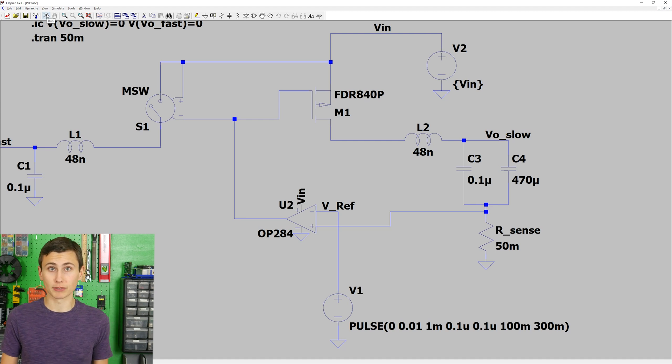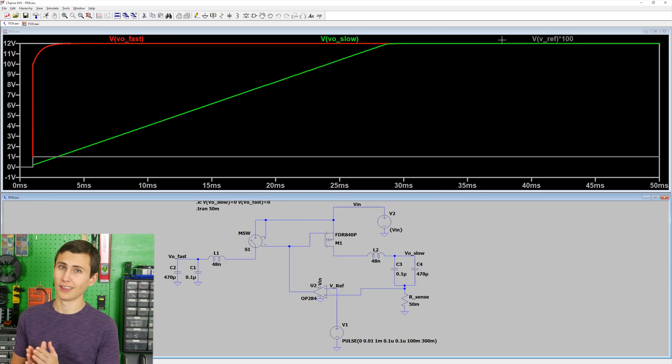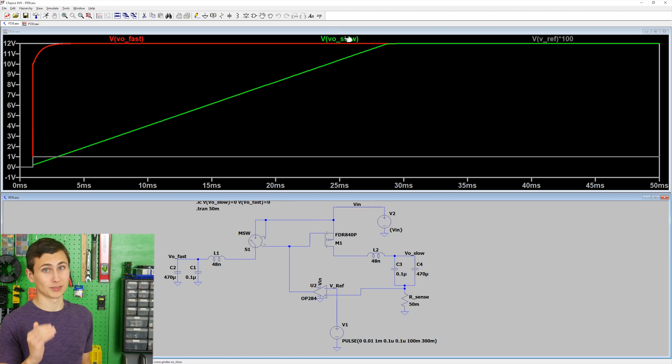Ignoring efficiency, heat, and everything else for just a moment, let's just appreciate how smooth the turn-on characteristic is for this output voltage. It's nearly a straight line, ramping smoothly from 0 to 12 volts when the switch is activated.